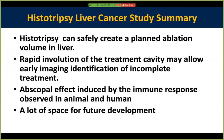To summarize for cancer treatment: histotripsy can safely treat a planned ablation volume in the liver through intact chest and ribcage. There is rapid absorption of the treated volume, enabling early imaging identification of complete treatment. Abscopal effects induced by histotripsy and immune responses have been observed in both animal and human studies, with significant potential for further development.